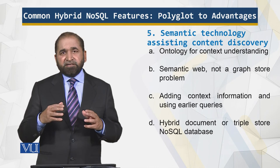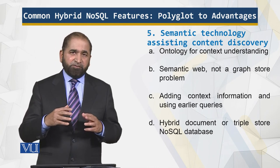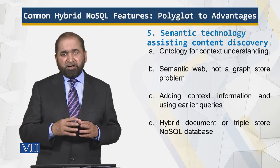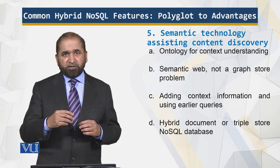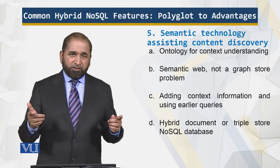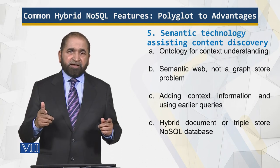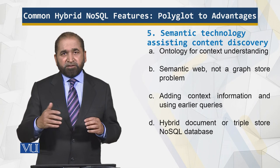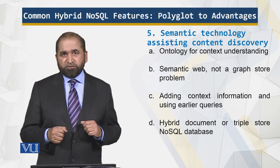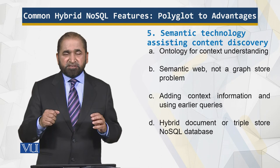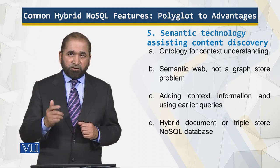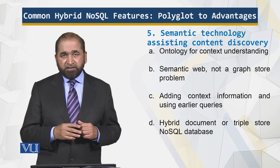Everything or every problem cannot be modeled using the relational model. You have to look for relationships not based upon the primary key and the foreign key, but how things are connected. For that, you need a triple store, which is supported by the hybrid approach of the NoSQL solution.